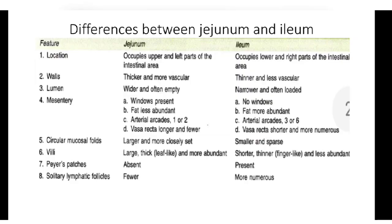Differences between jejunum and ileum: Location — jejunum occupies the upper and left part of the intestinal area, ileum occupies the lower and right part. Walls — jejunum walls are thicker and more vascular; ileum walls are thinner and less vascular. Lumen — jejunum is wider and empty; ileum is narrower and loaded. Windows (mesenteric translucencies) — present in jejunum, absent in ileum. Fat — less abundant in jejunum, more abundant in ileum.